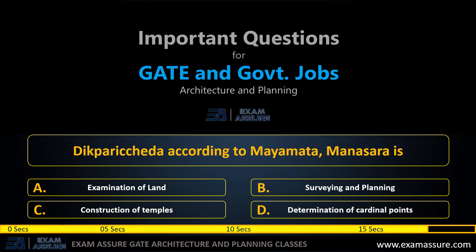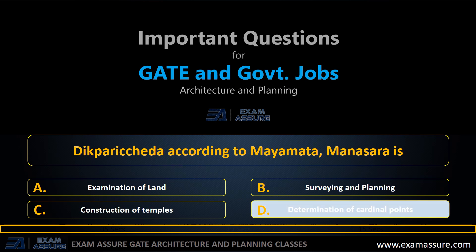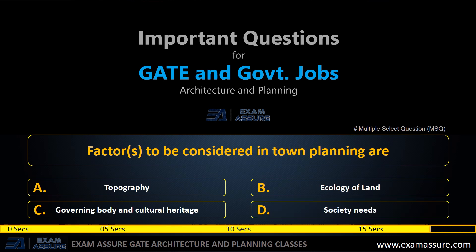Next question: Dikpaadi Cheda according to Maya Mata Mansara is — option A: examination of land, option B: surveying and planning, option C: construction of temples, option D: determination of cardinal points. The correct answer is option D: determination of cardinal points.